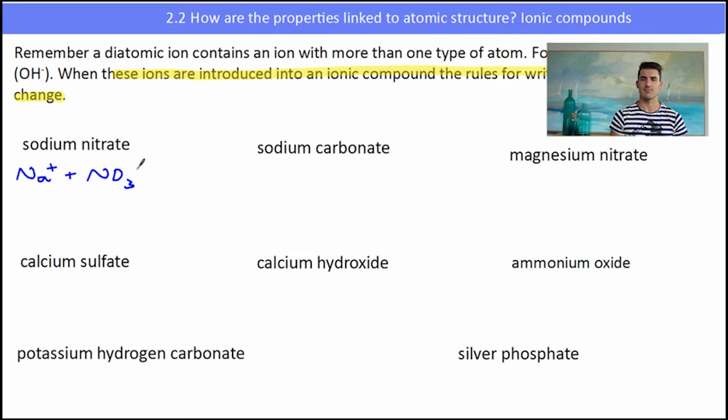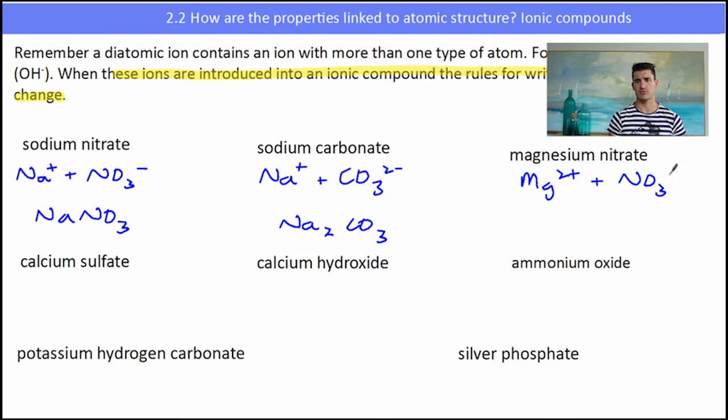So sodium nitrate will be Na+ and NO3 minus. The plus and the minus cancel each other out, so the formula is NaNO3. Sodium carbonate, sodium is a 1 plus ion, and the carbonate is CO3 2 minus. So to balance the charge on the carbonate, I'm going to need two sodiums. Of course sodium is only one atom, it's Na2CO3. Magnesium nitrate is the first one we need to use brackets for. The nitrate is NO3 minus, and that doesn't balance all the charge on the magnesium. So I need another nitrate ion, and I need the whole thing. So the way we write that is the magnesium, and then I put brackets, NO3, to say that I need two of the NO3, and the two goes on the outside of the brackets.